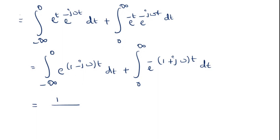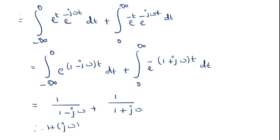This equals 1/(1 − jω) plus 1/(1 + jω). Therefore, H(jω) = 2/(1 + ω²).